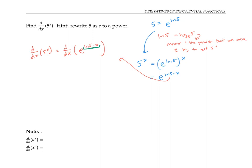By the chain rule, I take the derivative of the outside function e to the power, which gives me e to the power evaluated on the inside function — so I stick ln five times x in as the inside function. Then I multiply by the derivative of the inside function, ln five times x.